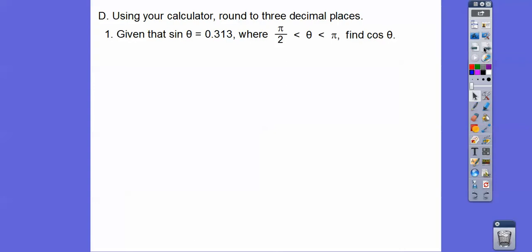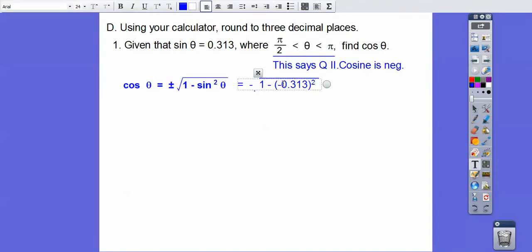Using your calculator, round to three decimal places. Right here between π over 2 and π, this is quadrant 2. Quadrant 2 tells us that only sine is positive, cosine is negative. So remember, sine squared plus cosine squared equals 1. So cosine squared equals 1 minus sine squared. So the cosine of θ is plus or minus 1 minus the sine squared of θ. And we want the minus part because we're in quadrant 2. So we're going to do the minus part. It's 1 minus this sine value right there. And so when I plug that into the calculator, I get the cosine to be about a negative 0.950.